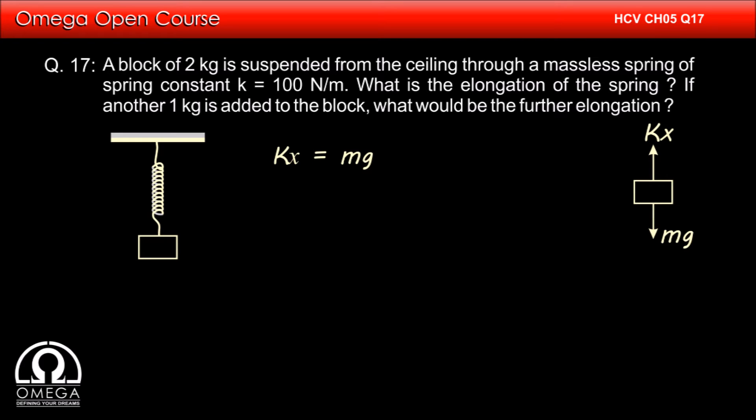Therefore, kx = mg. Putting the values, we get 100 × x = 2 × 10 or x = 0.2 meters or 20 centimeters. This is our answer to the first part of the question.